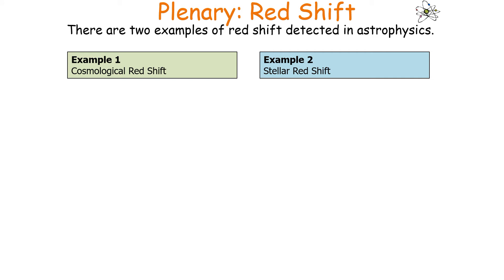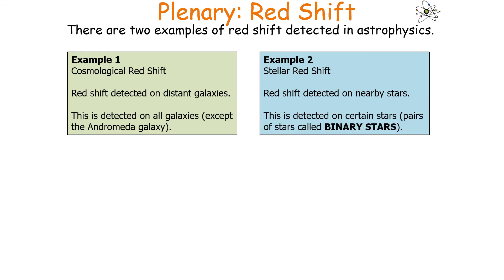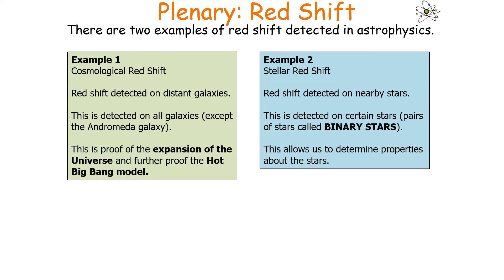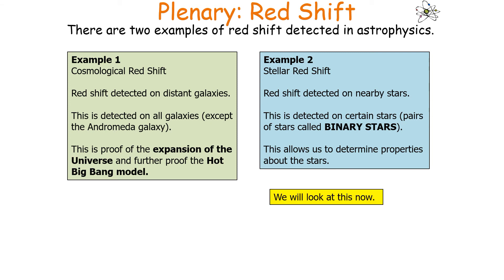There are two examples of redshift detected in astrophysics: cosmological redshift and stellar redshift. Cosmological redshift is detected on distant galaxies and is proof of the expansion of the universe and further evidence for the hot Big Bang model. Stellar redshift is detected on nearby stars and allows us to determine properties about those stars. We'll look at cosmic redshift in the next lesson, and stellar redshift now.